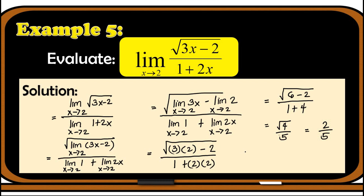This gives us 2 over 5. So we can conclude that the limit of the square root of 3x minus 2 over 1 plus 2x as x approaches 2 is equal to 2 over 5.